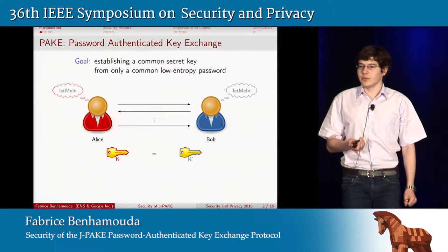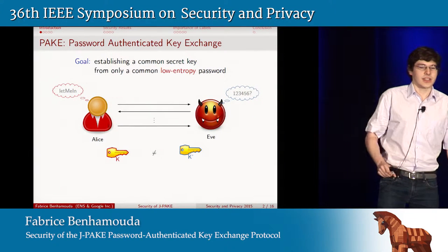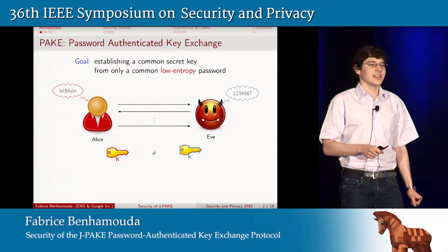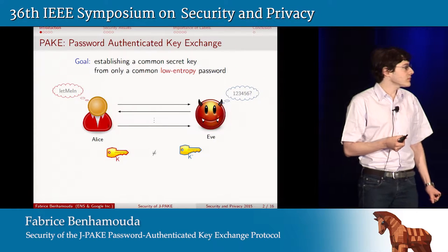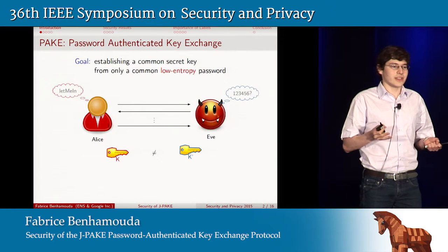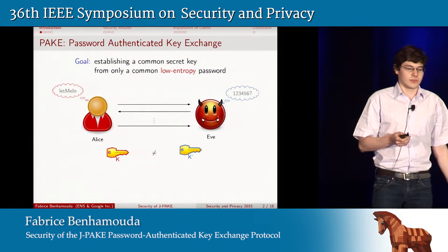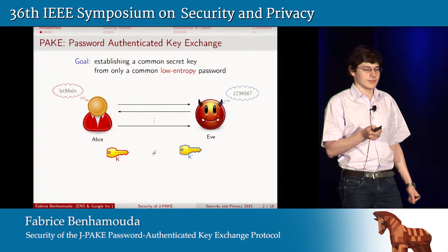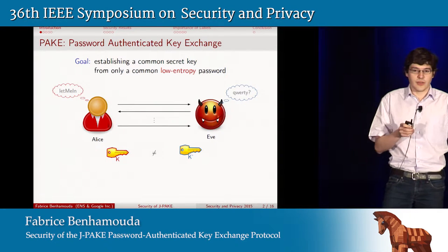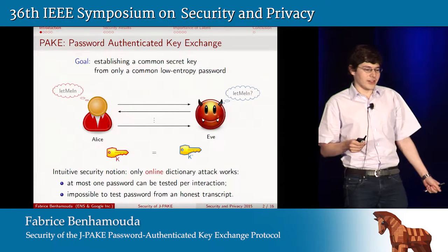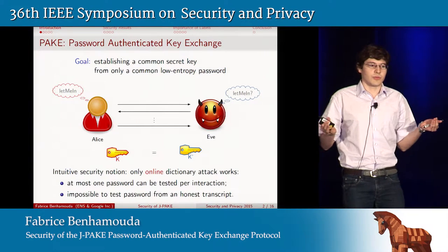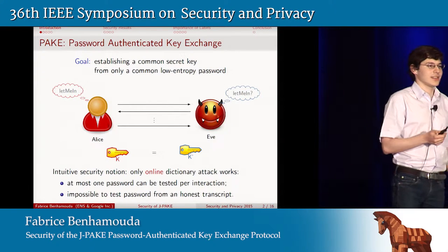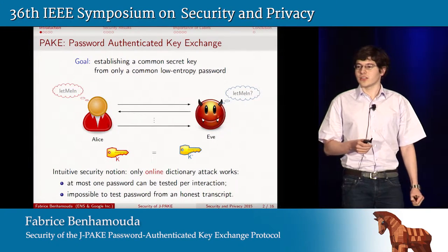With such a protocol, an adversary Eve can always try to guess the password used by Bob, then impersonate Bob and run the protocol honestly using the guessed password. If she did not guess correctly, she won't get the same key as Alice and won't get authenticated. But after several trials she may find the correct password, since there are only a small number of possible passwords, and she will get authenticated to Alice and get the same key. This attack is called an online dictionary attack.